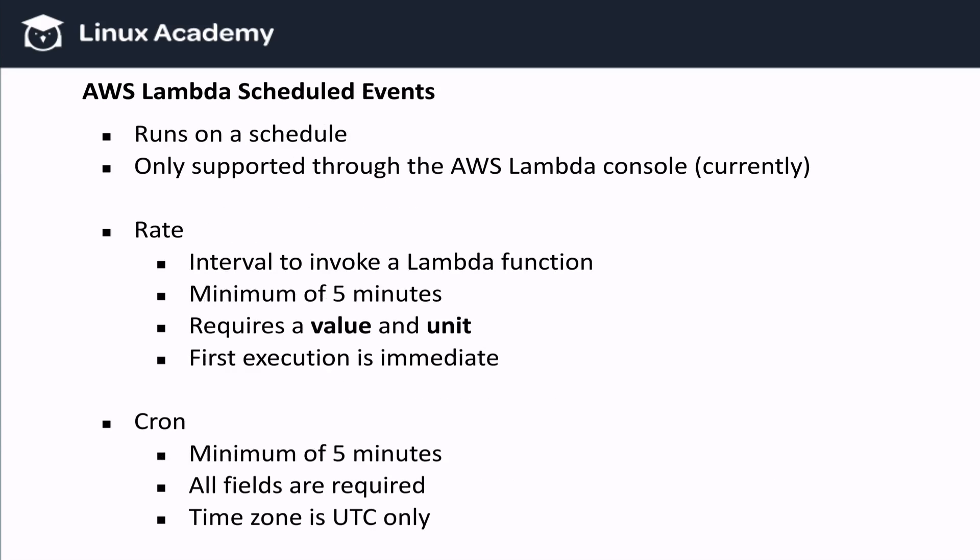Another available source of events is called scheduled events. As the name implies, we can schedule AWS Lambda to execute a Lambda function on a regular basis. You can set a fixed schedule, like execute every 3 hours, or you can also specify a cron expression. Keep in mind that this is currently only available through your console, but I wouldn't be surprised to see that change in the future.